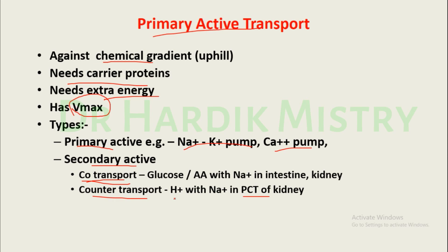The difference between primary and secondary active transport: in primary active transport, energy is derived directly from the breakdown of ATP. In secondary active transport, energy is derived secondarily from energy stored in the form of ionic concentration differences between the two sides of the membrane — that is, the ionic difference across the cell membrane.